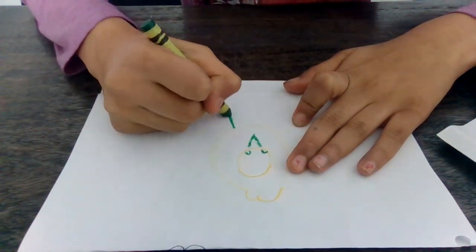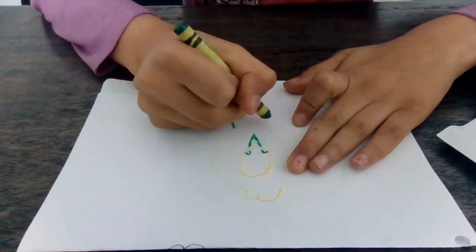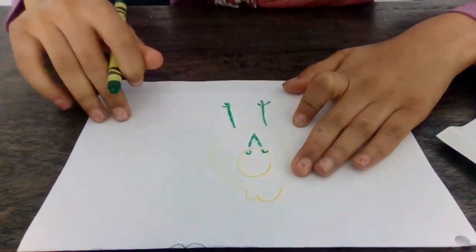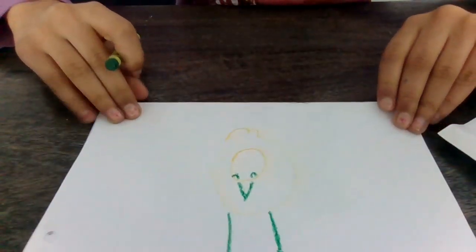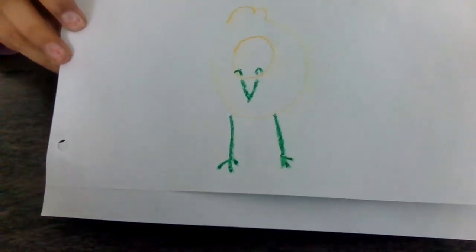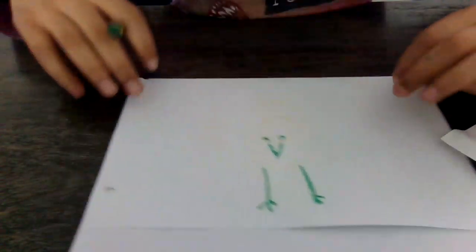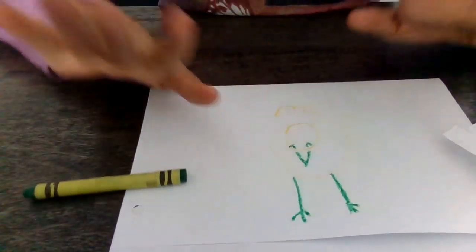Then draw some legs and there you have it, a super simple drawing, just a chicken looking down. I hope you like it. Bye guys!